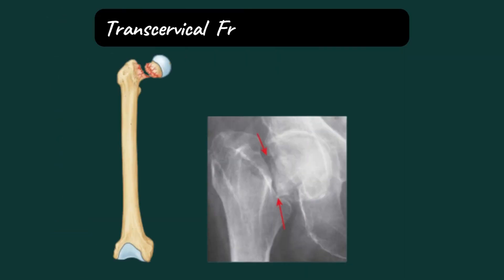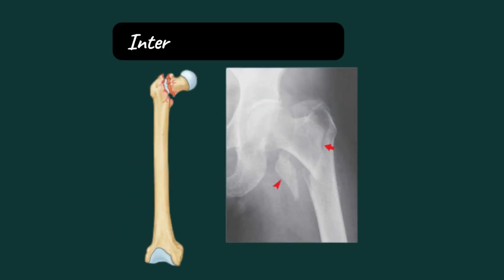The femoral neck becomes increasingly vulnerable with age, especially in older females secondary to osteoporosis. Here you can see a diagram as well as a radiograph of a patient having a transcervical fracture of the femoral neck. This is a type of intracapsular fracture. Intracapsular fractures that occur within the hip joint capsule are complicated by degeneration of the femoral head owing to vascular trauma from damage to the retinacular arteries.